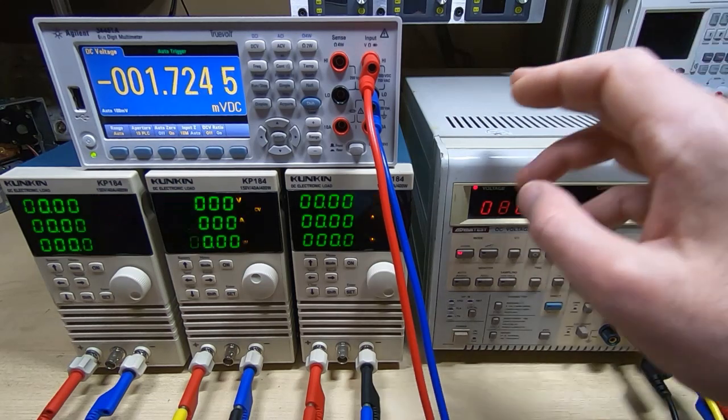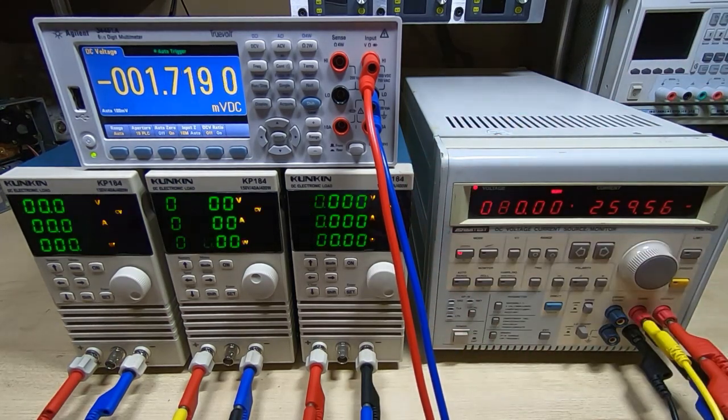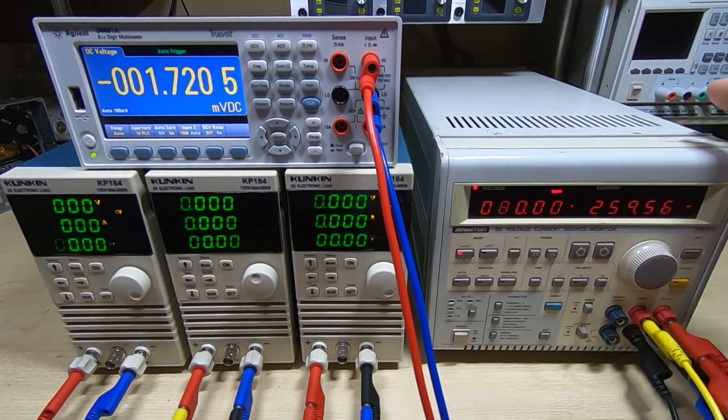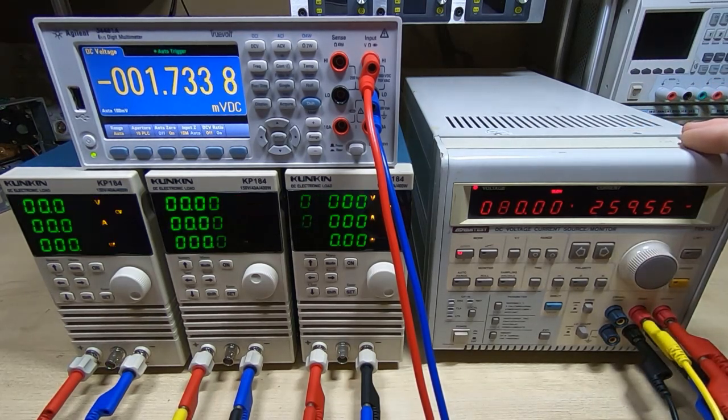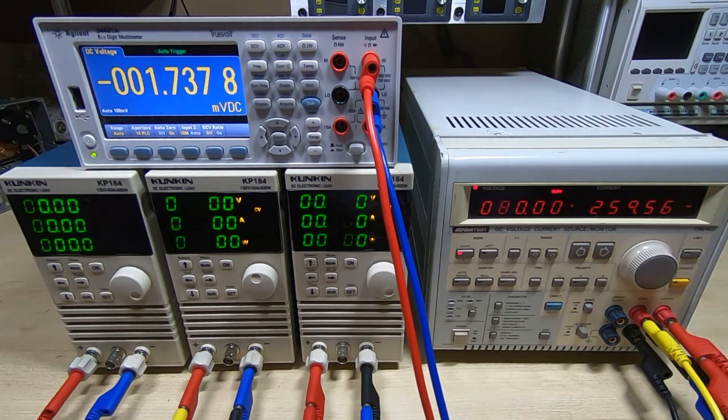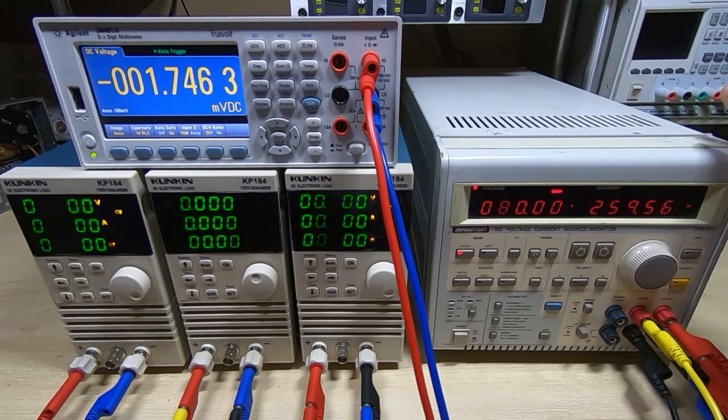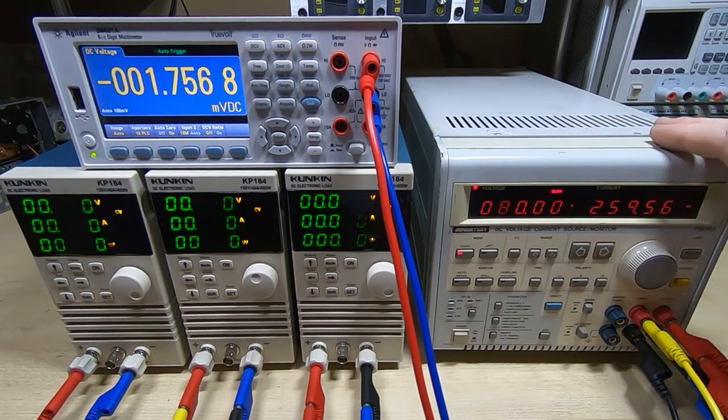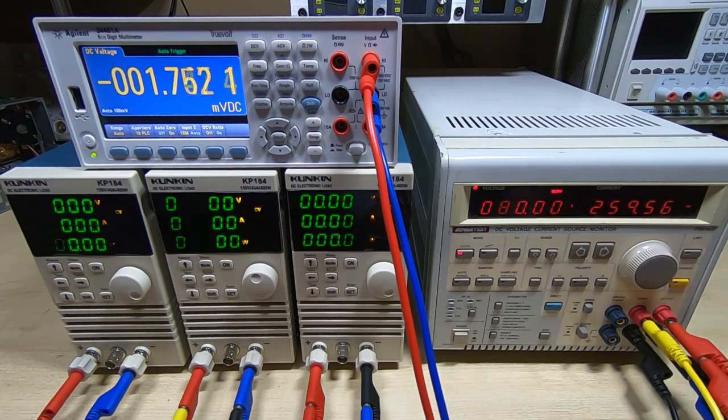In fact it's way overkill for calibrating something like a KP184. To give you an idea of the specification, it can output voltage from 0 up to 110 volts in 10 microvolt steps and it can output current from 0 to 2 amps in 1 nanoamp steps. So extremely precise, especially in the current range.